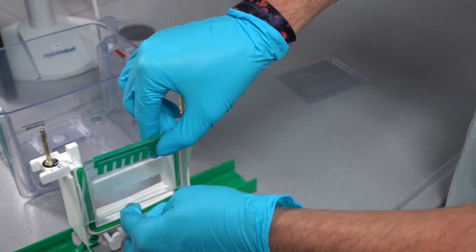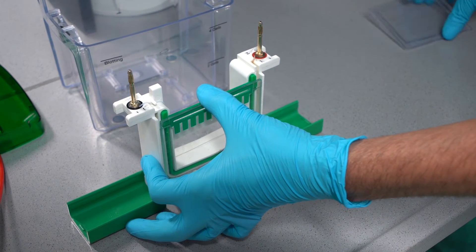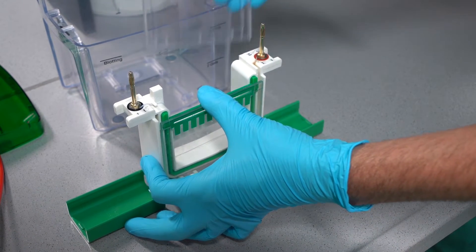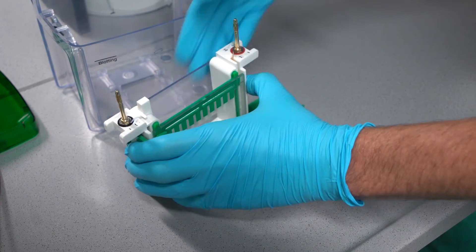When placing the gel, make sure that the spacer plate is facing outwards and the short plate inwards. By placing the gel in the buffer dam or two gels into the electrophoresis frame, an inner chamber is created that will be filled with buffer.